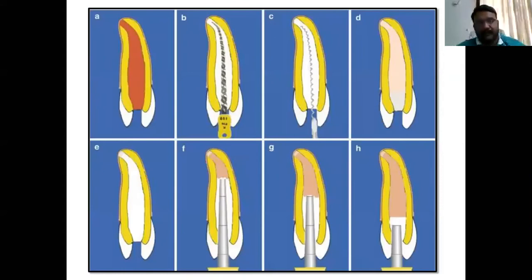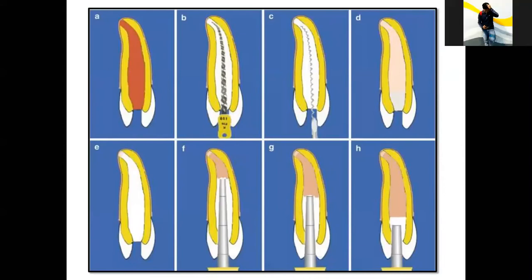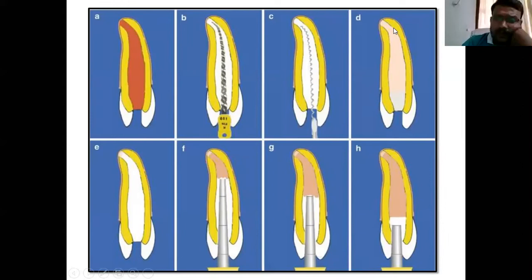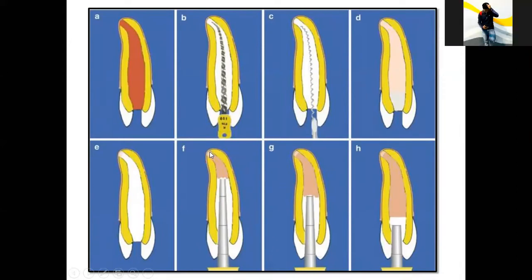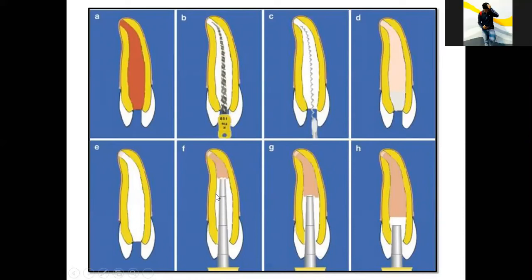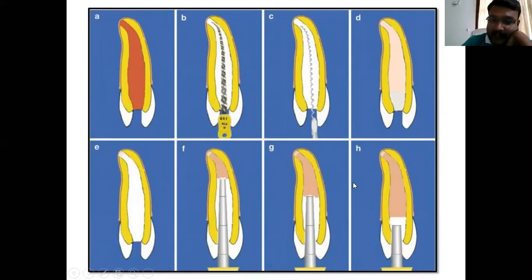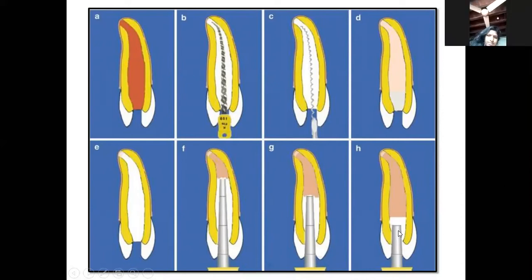The procedure of apexification: first, do a proper access cavity preparation, then extirpate the pulpal tissue, dry the canal properly, and place calcium hydroxide at the apex. You can see in the diagram that calcium hydroxide is placed, then an interim restorative material is placed. Once you achieve apical closure, you nicely obturate the tooth and go for a coronal restoration.